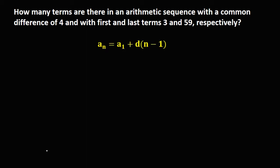So using this formula, a_n, that's the last term, a_1, that's the first term, and d is the common difference.